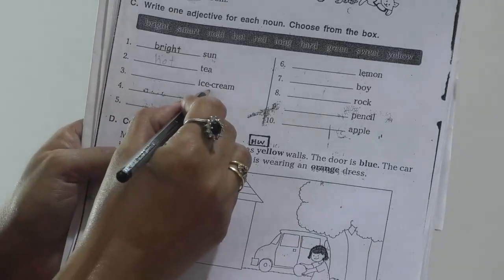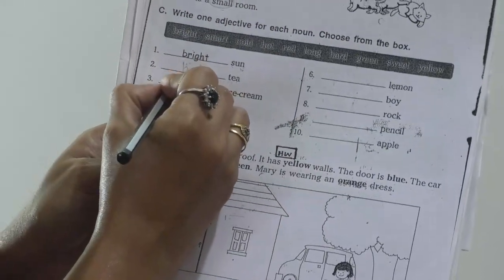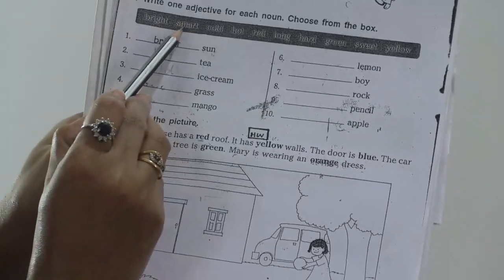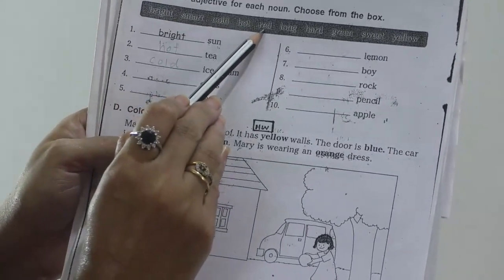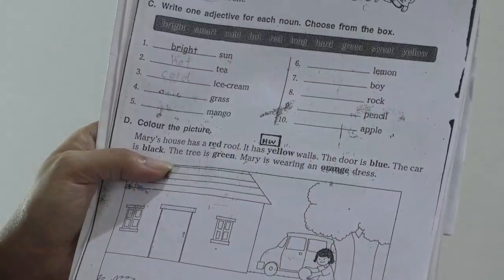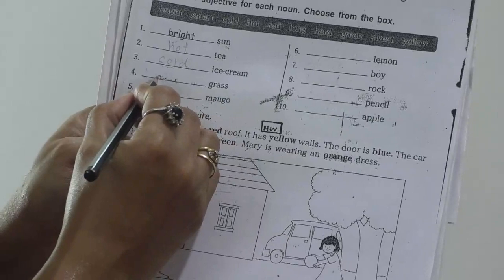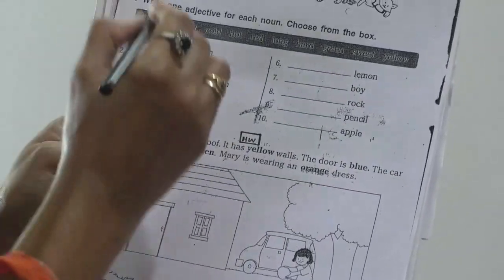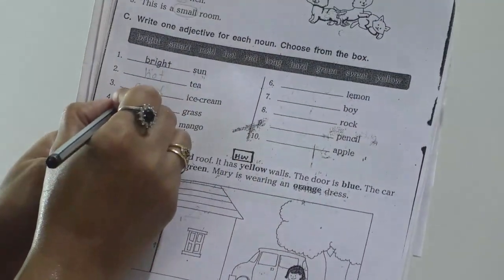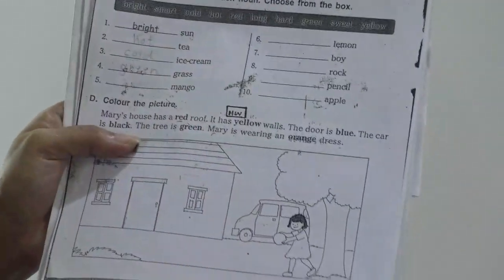Next, dash ice cream. Here the word adjective is cold ice cream, C-O-L-D. One more thing, just listen. Bright, smart, cold, hot, red, long, hard, green, sweet and yellow. These adjectives we are using here. Next, number 4, dash grass. Which is suitable adjective? Green grass. They told about the grass. Green grass, the color of the grass.